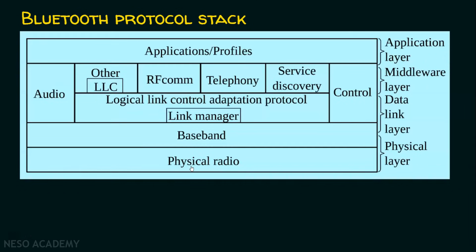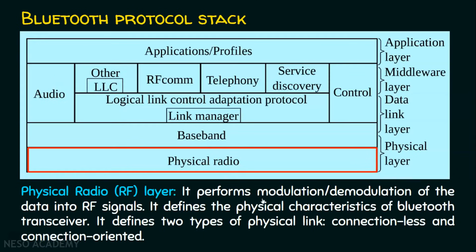The first layer is the physical radio layer. The physical radio layer performs modulation and demodulation of data into radio signals. Suppose one Bluetooth device is going to send data to another Bluetooth device — whatever is generated in the device is the data, and those data have to be converted into radio signals. This layer also defines the physical characteristics of Bluetooth transceivers. A transceiver can be a transmitter as well as a receiver, because when the Bluetooth adapter is a sender it transmits, and when it is a receiver it receives.